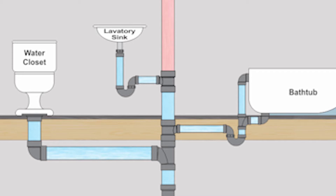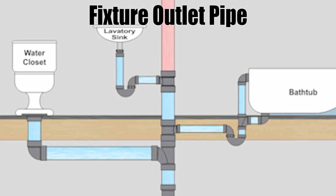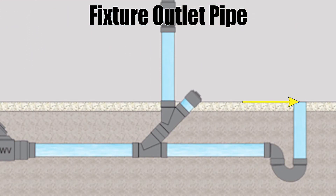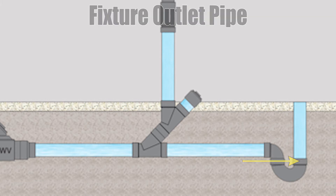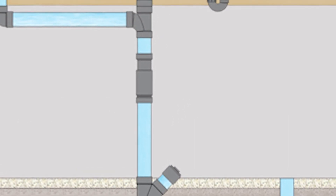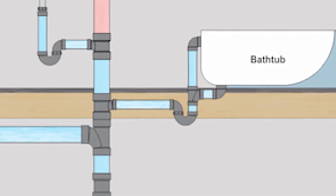The next name focuses on the piece of pipe that goes down from the lab sink until it meets up with a trap — we call that the fixture outlet pipe. The bathtub also has one, just a tiny piece, and the floor drain has a fairly large one going from the floor to the trap. The code definition: fixture outlet pipe means a pipe that connects the waste opening of a fixture to the trap serving the fixture.